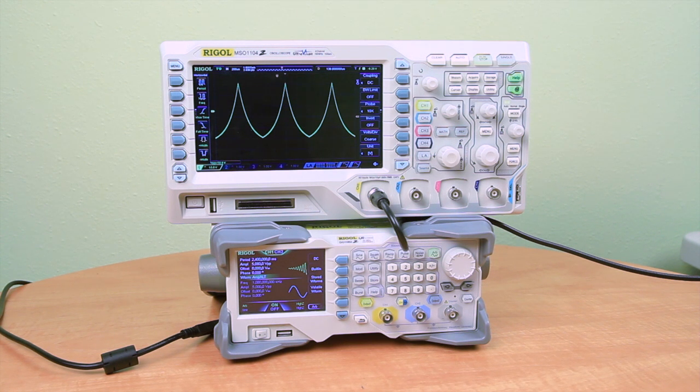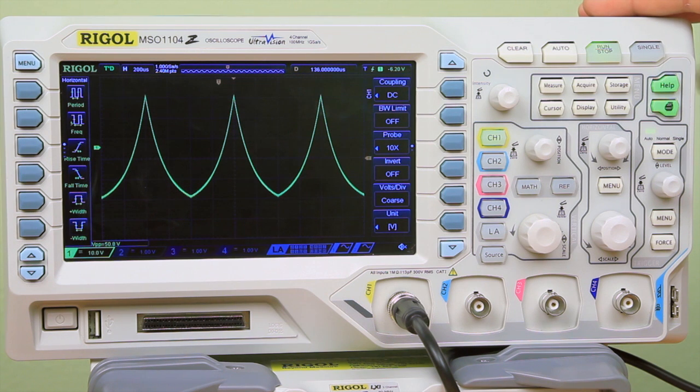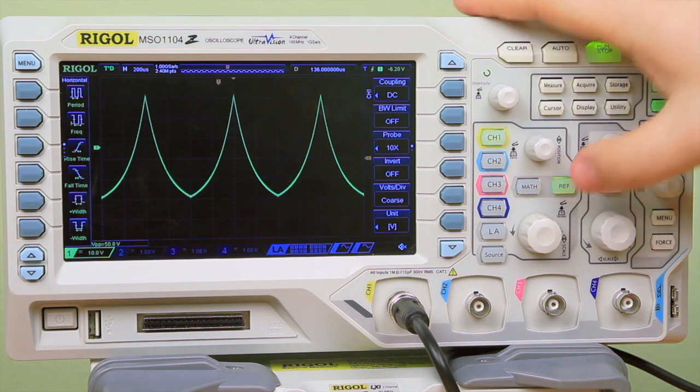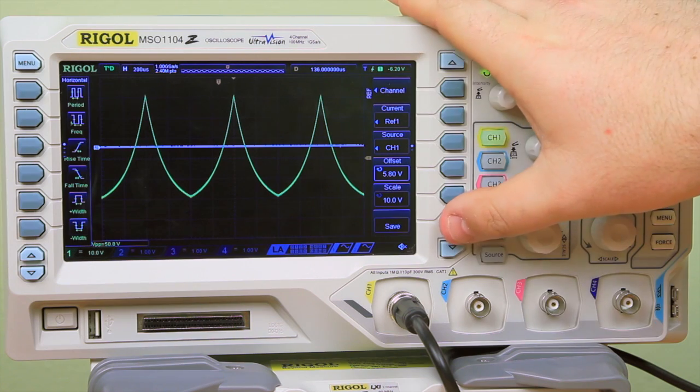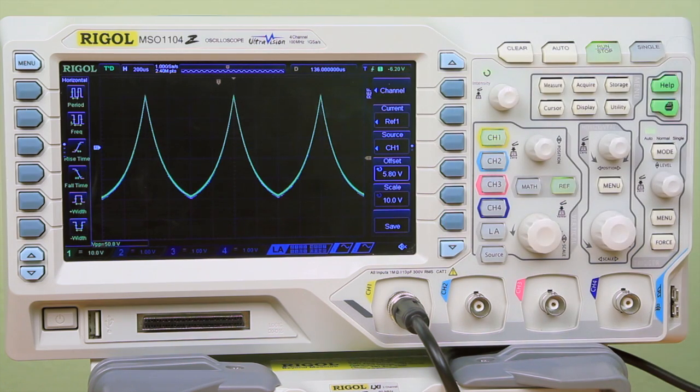I am currently capturing a Laplacian signal with our 1000Z series oscilloscope. To save a reference for when we reproduce it with the waveform generator, I'm going to hit reference and we'll see this gray line. I'll make certain it's on channel 1 and then I will hit save.